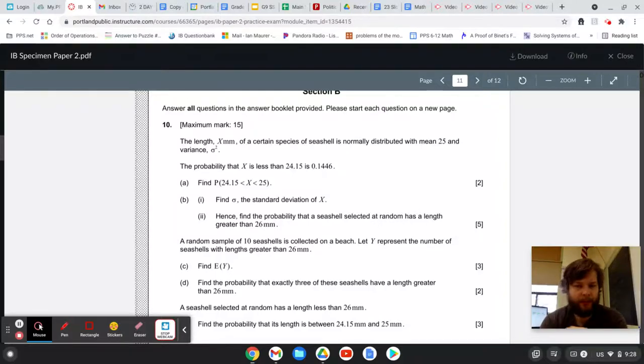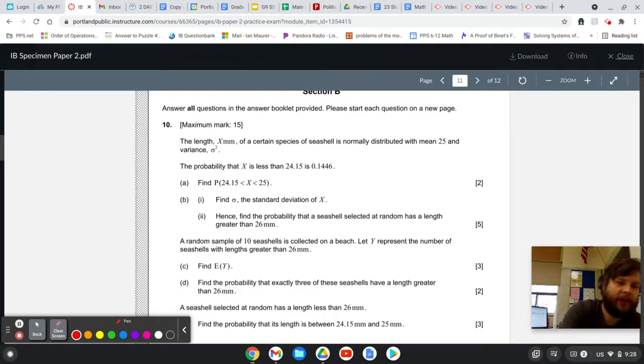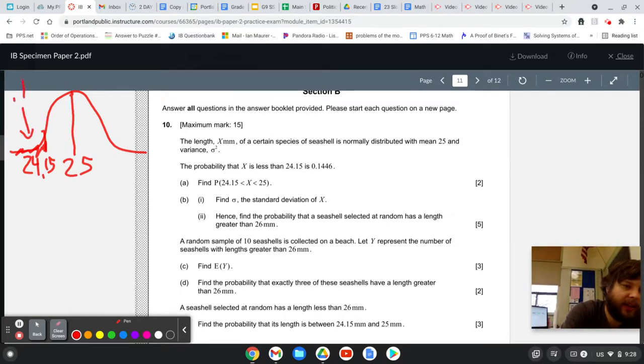Alright, so here we have question 10 from the IB practice exam about the seashells that have the lengths normally distributed with mean 25 and variance sigma squared. The first thing I would suggest is if you draw this little normal curve, put 25 right there, and then it tells you that the probability that x is less than 24.15 is 0.1446. So that shaded area right there is 0.1446.